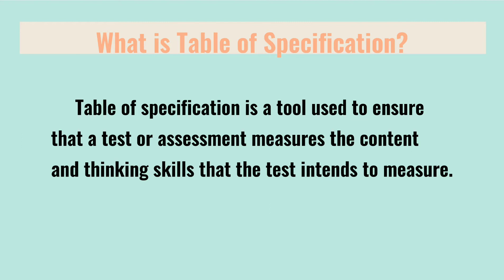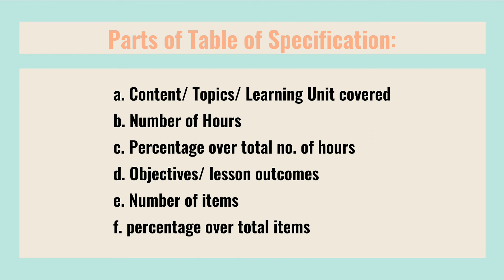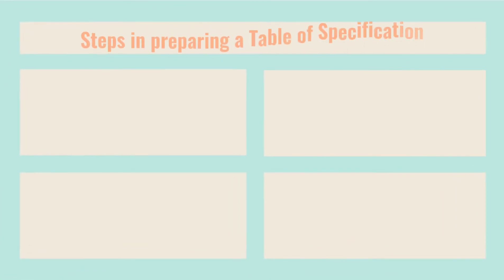Before constructing a table of specification, you must already have discussed the topics covered by your test. Here are the parts of the table of specification: A) the content topics or learning unit covered; B) the number of hours; C) the percentage of the overall total number of hours; D) the objectives or lesson outcomes; E) the number of items; and lastly, the percentage of overall total items. Let us now proceed with the steps in preparing the table of specification.